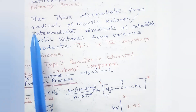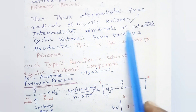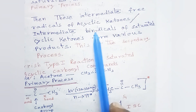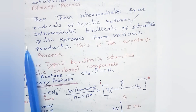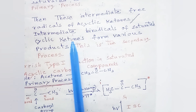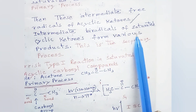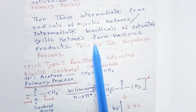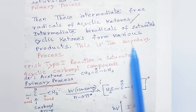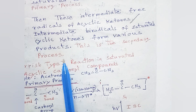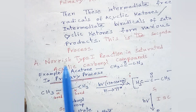These intermediate free radicals of acyclic ketones, or intermediate biradicals of cyclic saturated ketones, then form various products. This is the secondary process. Now let us look at Norrish Type 1 reactions in saturated acyclic carbonyl compounds.